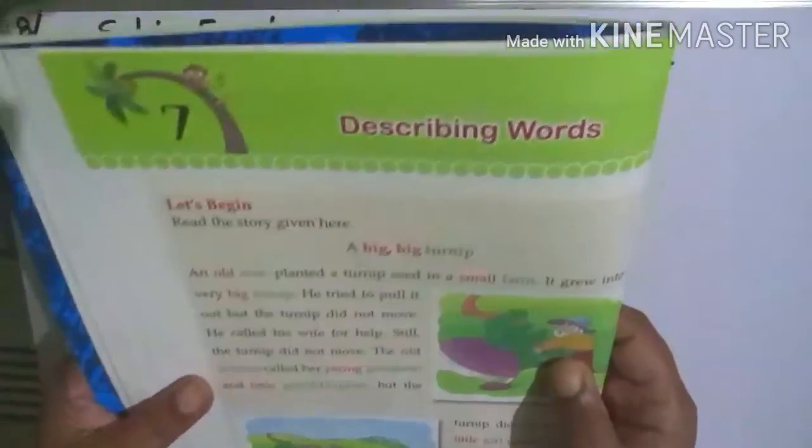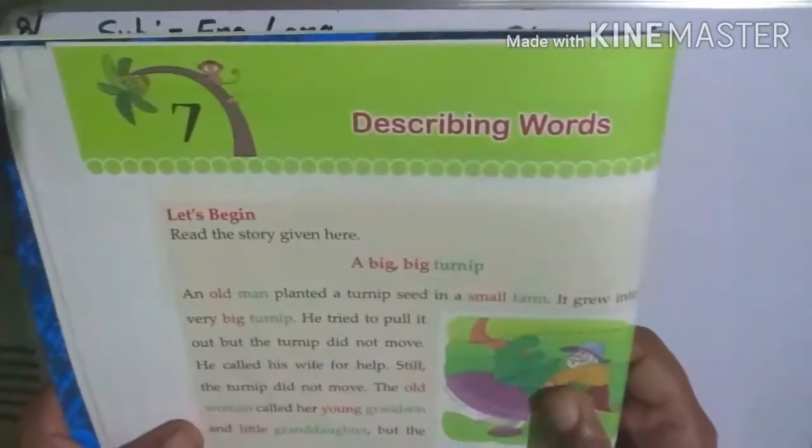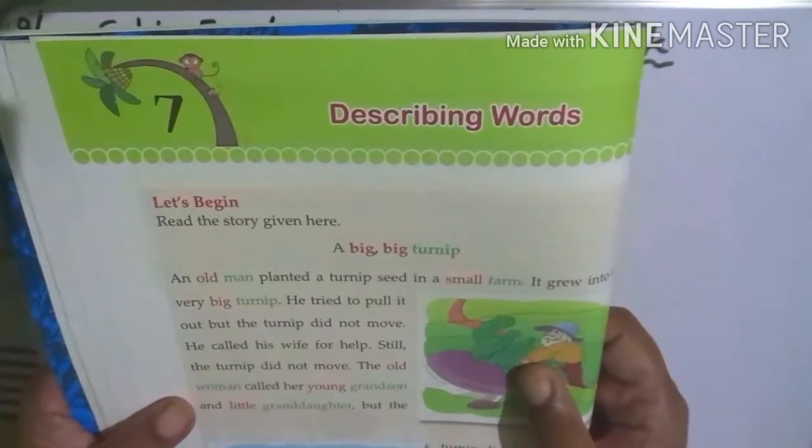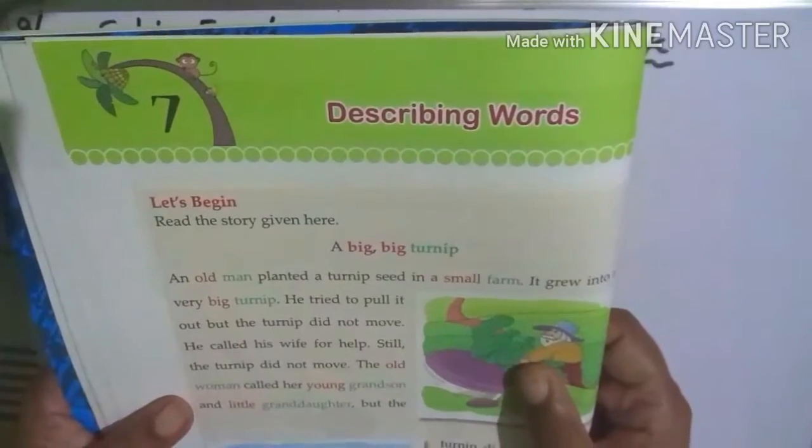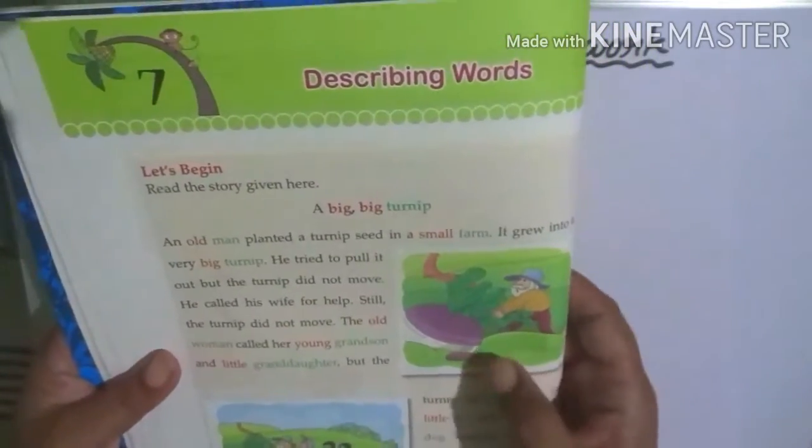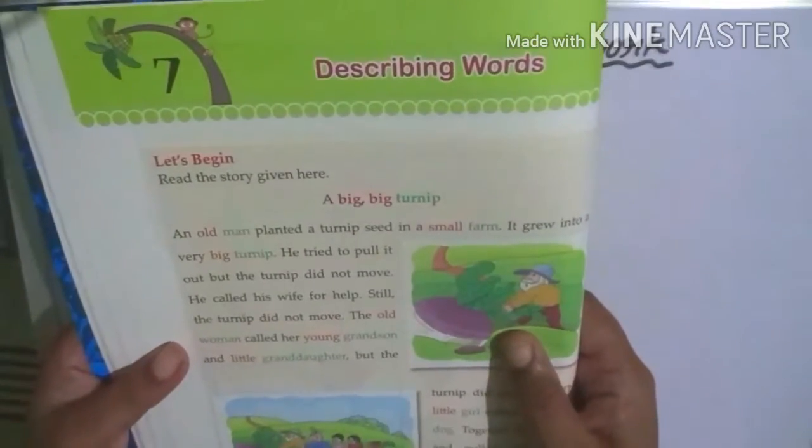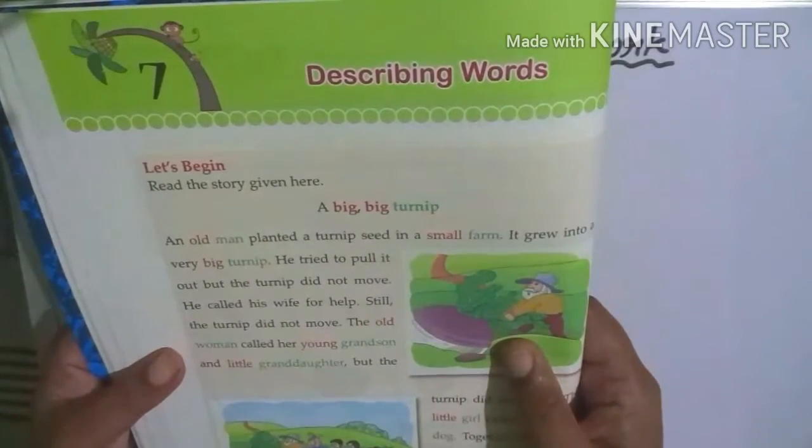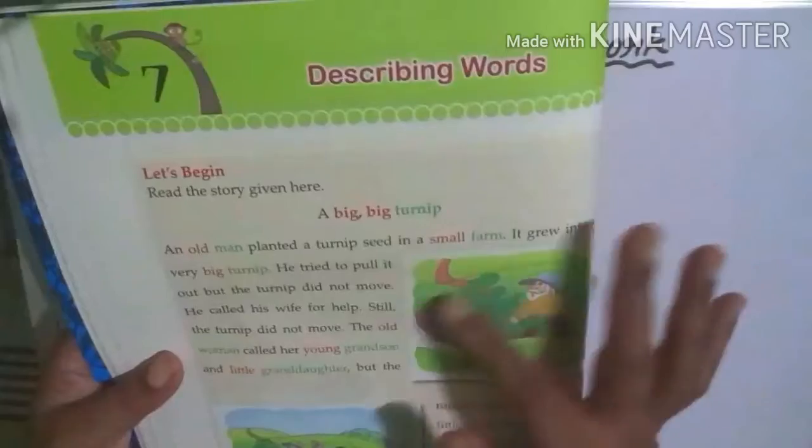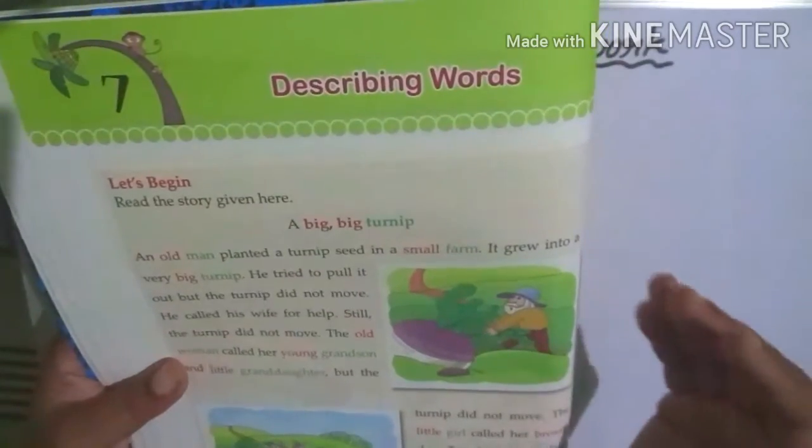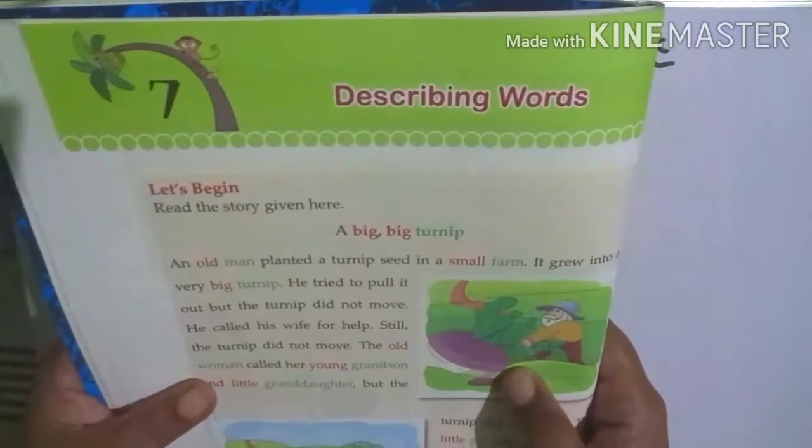Describing words. Let's begin. Read the story given here: A big, big turnip. See the picture right side and left side. An old man planted a turnip seed in a small farm. It grew into a very big turnip.